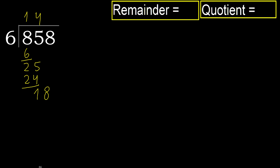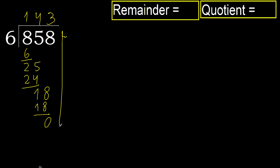18. 6 multiplied by 3 is 18, 18 is not greater. Subtract. Next — there is no number, therefore finish it.